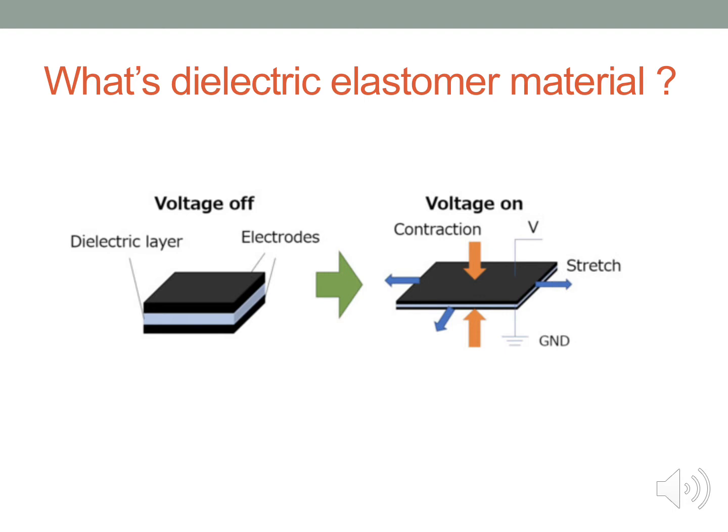When a voltage is applied between the electrodes, the rising voltage causes a decrease in the thickness and an increase in the area of the membrane, which can make the material move or change shape.